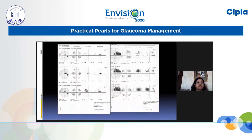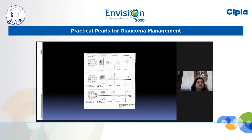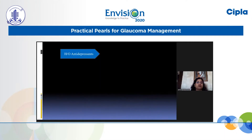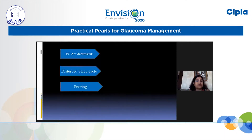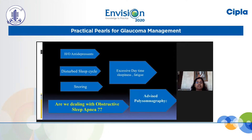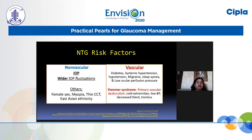This patient progressed over three years despite no single recorded event of high IOP while on one medication. When we probed deep into his history, his wife gave a history of disturbed sleep cycle, snoring, excessive daytime sleepiness, and fatigue — consistent with possible obstructive sleep apnea. He was advised polysomnography, though we are still awaiting his report. There is a definite history of increased snoring and disturbed sleep.